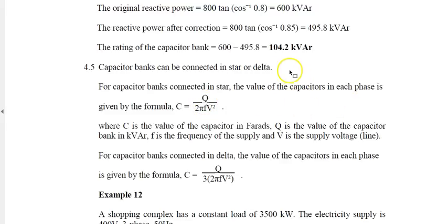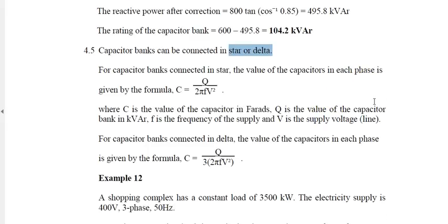Capacitor banks can be connected in star or delta. For capacitor banks connected in star, the value of the capacitors in each phase is given by the formula: C equals Q in VAR divided by 2 pi F V squared, where C is the capacitor value in farads, Q is the capacitor in kVAR, F is the frequency of supply (in Singapore it's 50 hertz), and V is the supply line voltage. For capacitor banks connected in delta, the only difference is I have an extra 3 at the bottom.